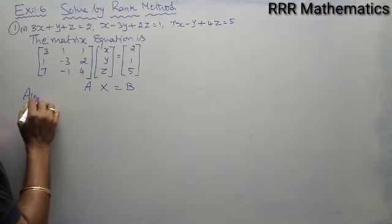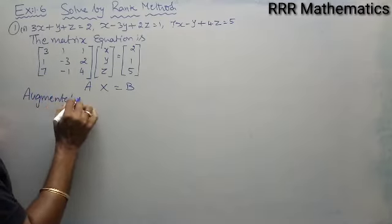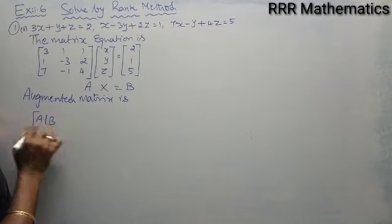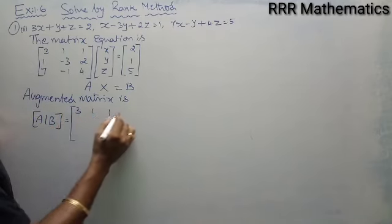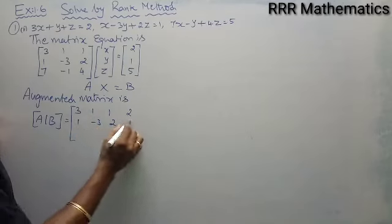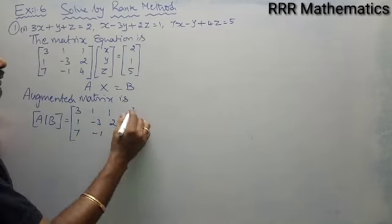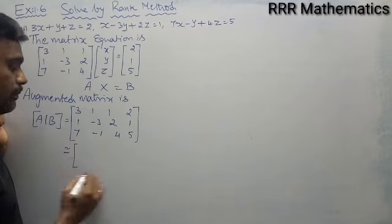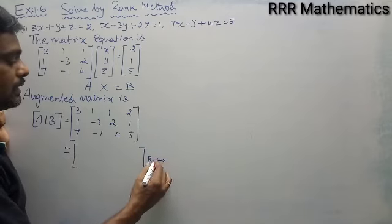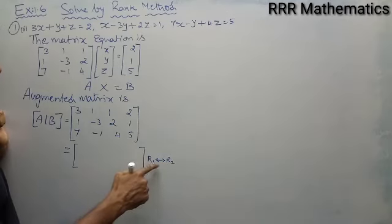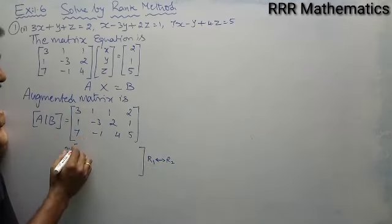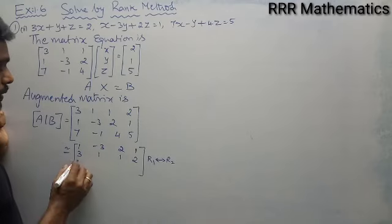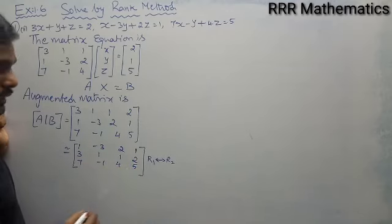The next step is to form the augmented matrix by combining A and B together: [3, 1, 1 | 2; 1, -3, 2 | 1; 7, -1, 4 | 5]. To proceed comfortably, I need the position A11 to be 1. I can achieve this by interchanging R1 and R2. After the interchange, the first row becomes [1, -3, 2 | 1], the second row becomes [3, 1, 1 | 2], and the third row remains [7, -1, 4 | 5].